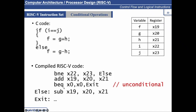That's why we have BEQ x0, x0 — branch if equal. We are comparing x0 with x0, or we could even use x22 with x22. Whatever the contents, they will remain the same when compared to themselves. So this condition is always going to satisfy, and the control jumps to the exit block without executing the else instruction. You could have simply written BEQ x22, x22, and that would also work.